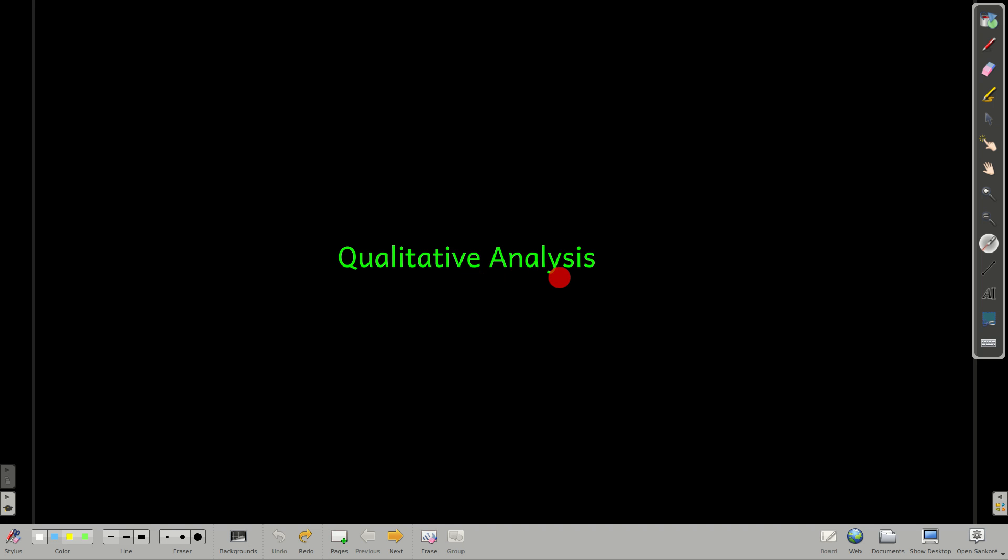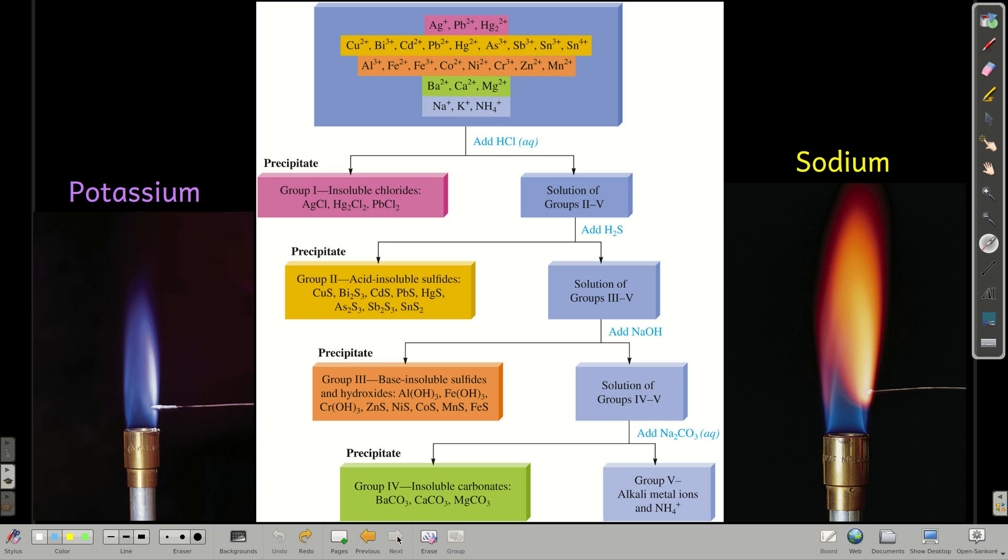This module is on qualitative analysis, and particularly how to separate cations that are in a solution from each other, or at least into groups. So this flow chart pretty much summarizes it. These are all of the major cations that you commonly see in a solution.